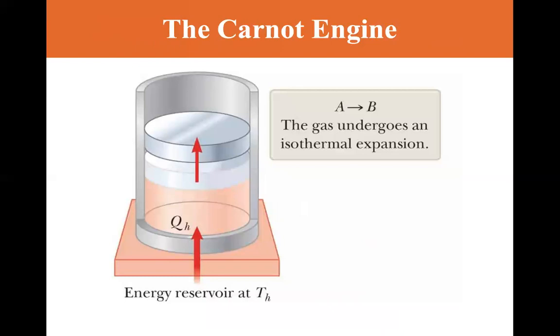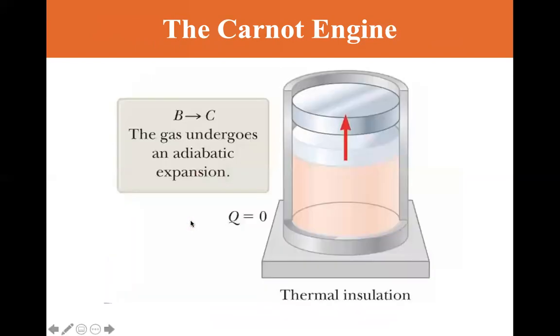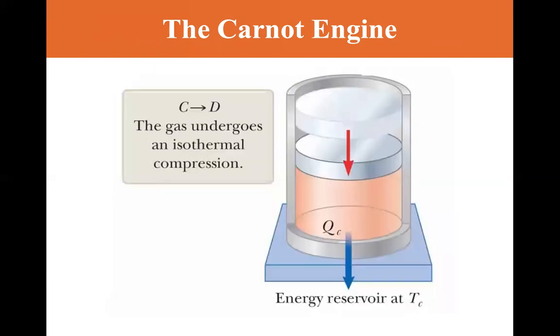A to B, the gas undergoes an isothermal expansion. And if you recall from the PV diagram, indeed, the volume increased. So because of the Q-hot coming in, there's an expansion. Now we put a thermal insulator, so there is no more transfer of energy via heat. So the gas undergoes an adiabatic expansion. No more heat is being added to it.